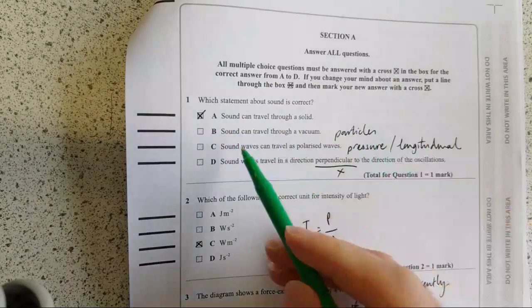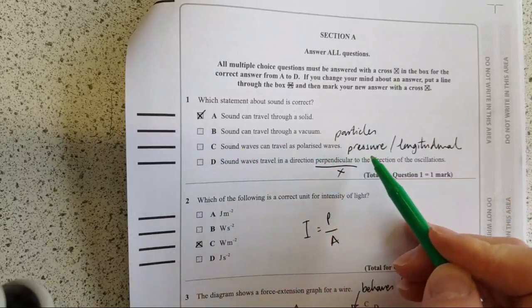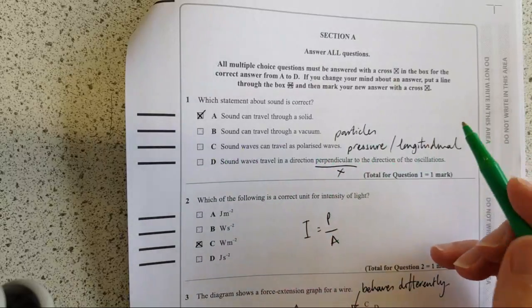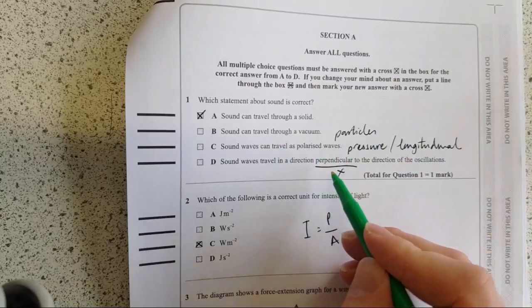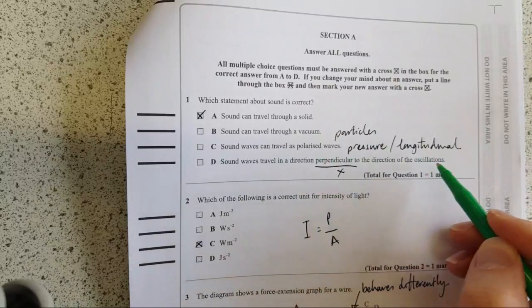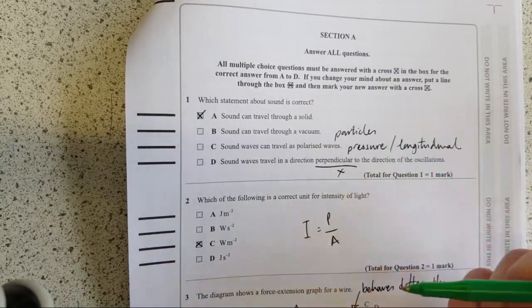Sound waves can be polarised. No, they can't because they're pressure waves, they're longitudinal waves. Sound waves travel in a direction perpendicular to the direction of oscillations. No, that is the definition of transverse waves so it's not that one.